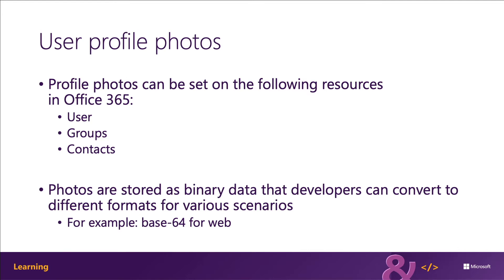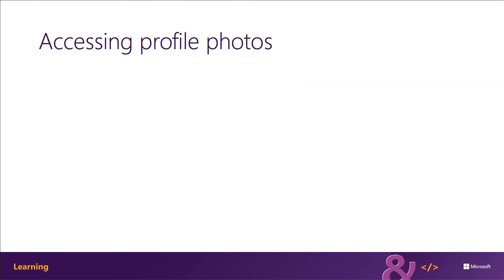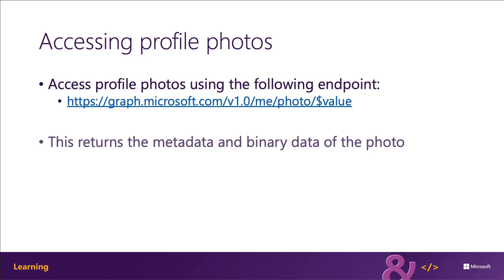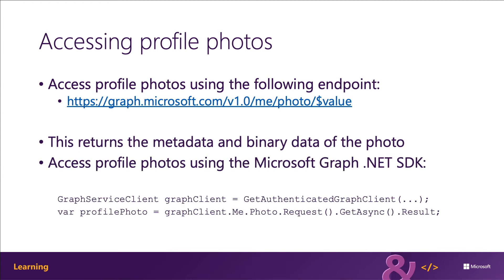To get a resource's profile photo, you're going to use the photo slash dollar value endpoint on the resource. For example, for the signed-in user's profile photo, you can access that at graph.microsoft.com/v1.0/me/photo/$value. That's going to return the metadata and the binary data of the photo. You can do the same operation with the Microsoft Graph .NET SDK by going to the photo property on the me object and then calling GetAsync to get the result.